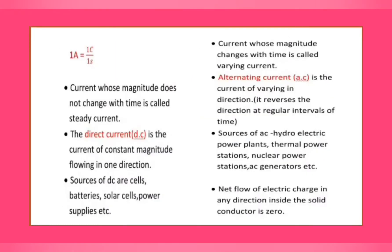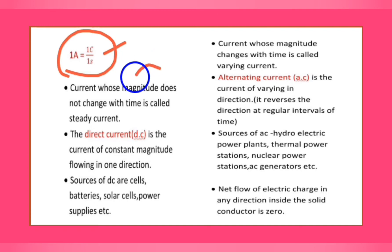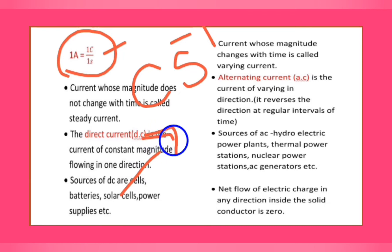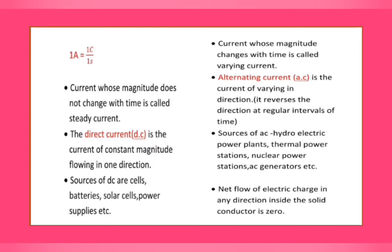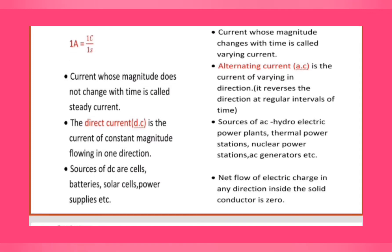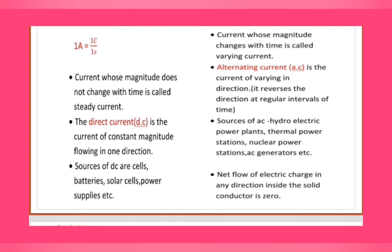The SI unit: 1 ampere of current is equal to 1 coulomb per 1 second, that is 1 ampere equals coulombs per second. 1 ampere current is defined as the current which flows through a conductor when a charge of 1 coulomb passes through it in 1 second.